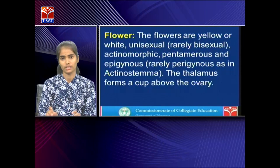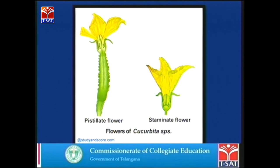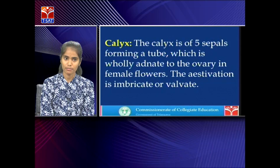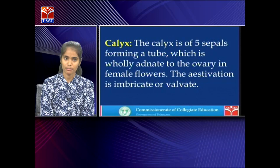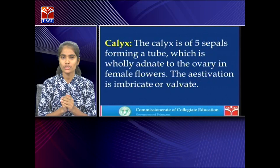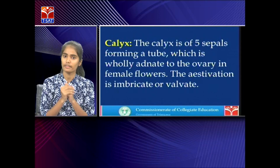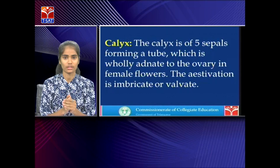The pistillate flower is the female flower and the staminate flower is the male flower. The calyx has five sepals forming a tube wholly adnate to the ovary in the female flowers — meaning totally fused with the ovary. The aestivation is imbricate (sepals overlapping each other in a regular fashion) or valvate (coming close to each other but not overlapping).